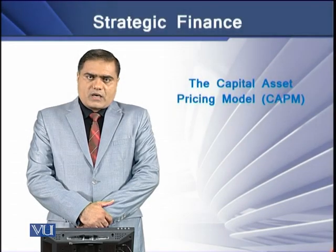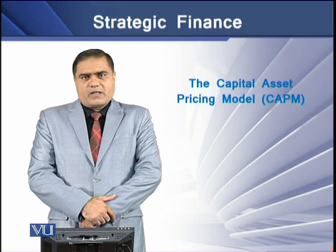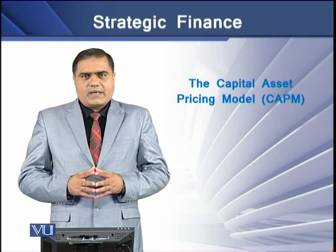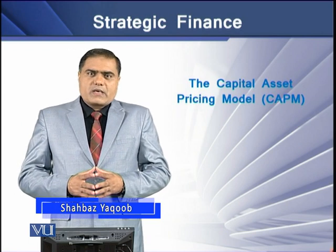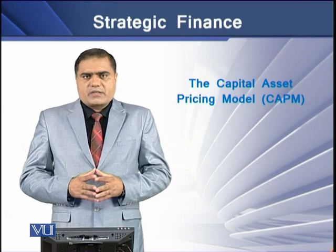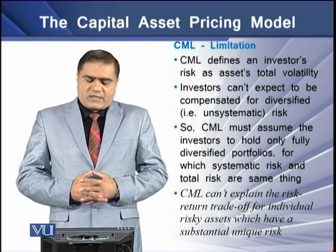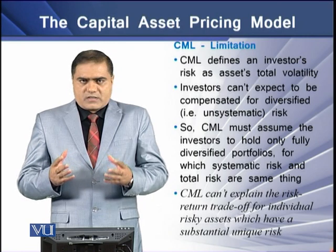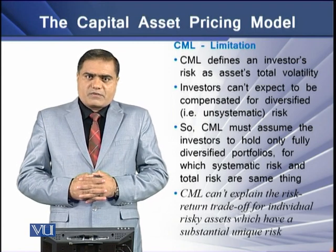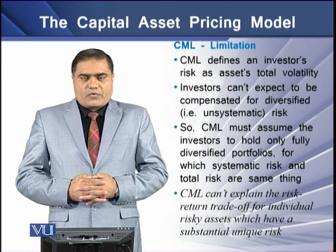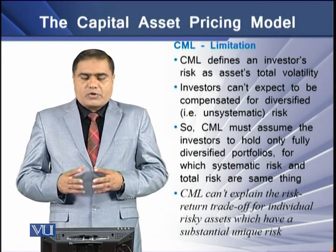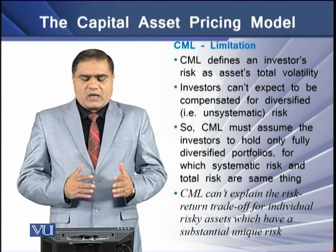The CML provides a precise way to compute an investor's risk for two things: the financial capital an investor provides and the market risk an investor bears. But the CML is unable to completely explain the relationship between risk and return. CML defines an investor's risk as an asset's total volatility, but an investor cannot expect to be compensated for the diversifiable or unsystematic risk. Therefore, CML assumes investors hold fully diversified portfolios, for which systematic and total risk are the same thing.